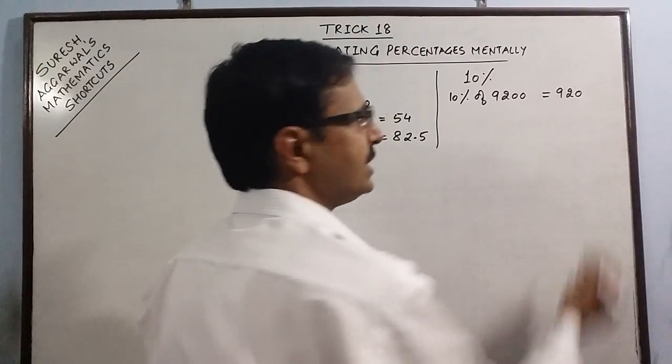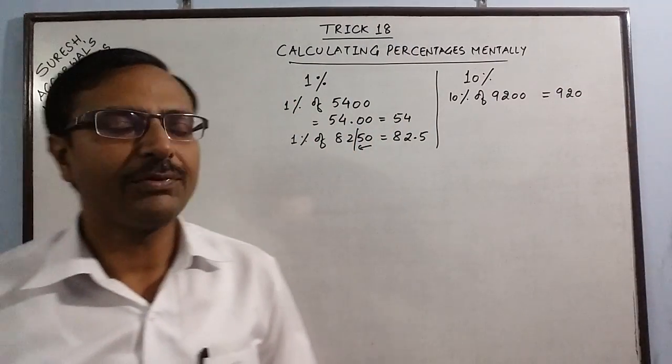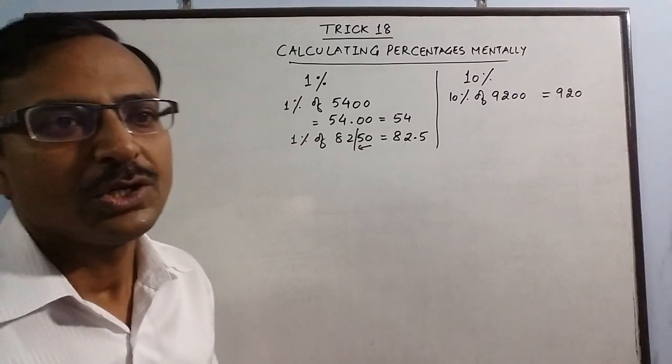So it becomes 920. So 10% of 9200 is 920.